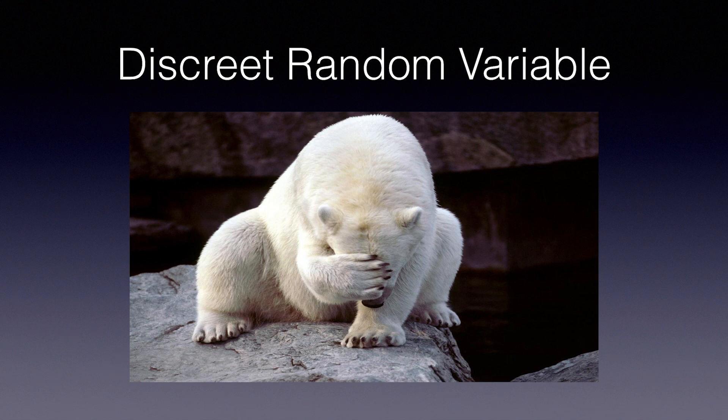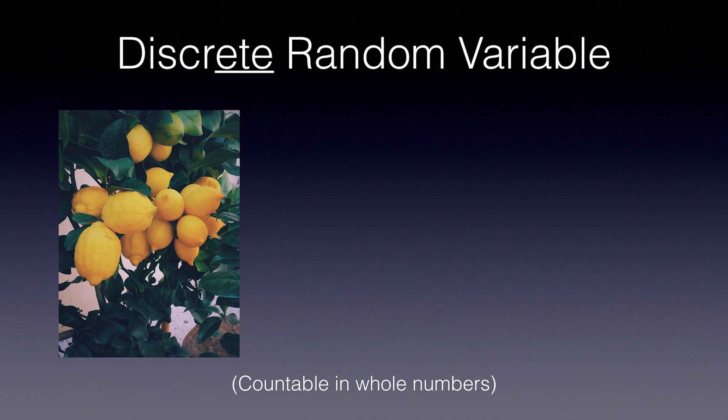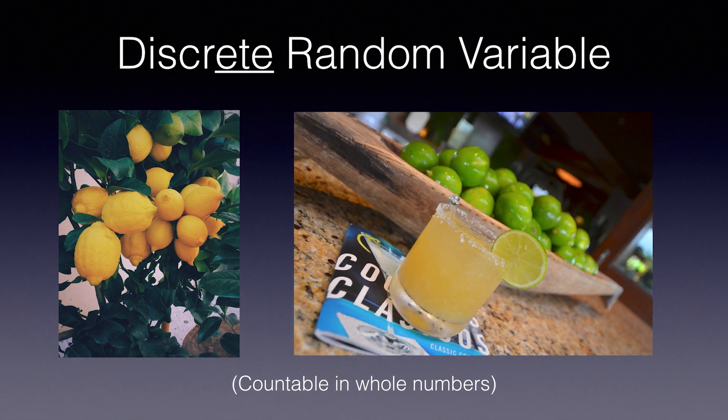But in data science, nobody cares about those, except in companies like Facebook that make money selling that kind of data. Plus, I just made that term up. What really matters for probability are discrete random variables — note the different spelling. Those are things you can count in whole numbers, like the number of lemons made by a tree, or the number of lemons made by Ford, or the number of limes consumed by Mexican restaurants on Cinco de Mayo.